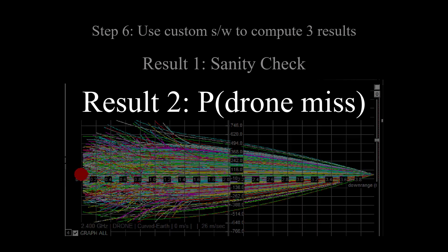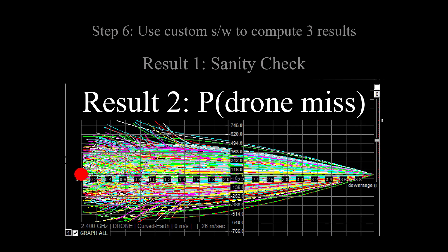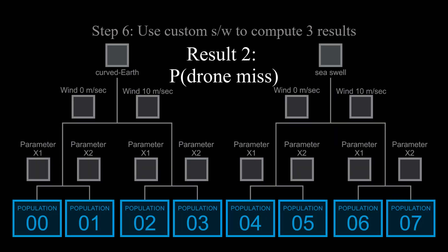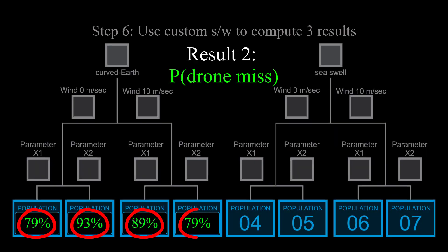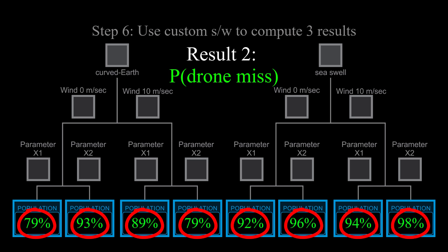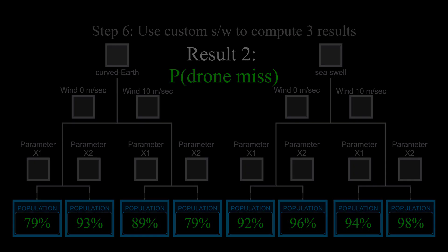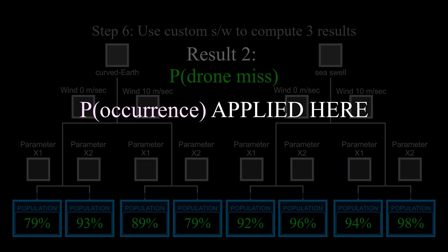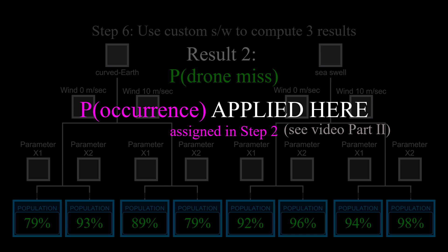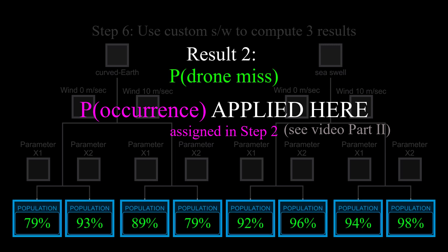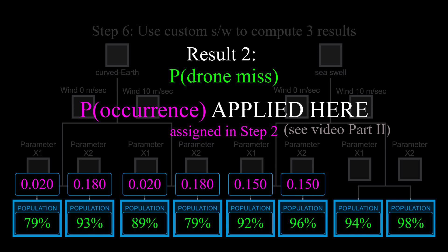Result two is the probability of a drone miss. If the population is confirmed to be pure, tabulate the hits and misses for each of the eight populations and calculate the probability of a miss. This is where the population's probability of occurrence is applied — the probability assigned in step two. In order to get the ensemble statistics, we have to properly weight all eight populations and all the runs in all the populations.